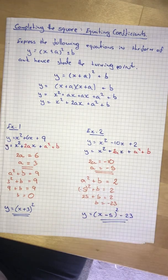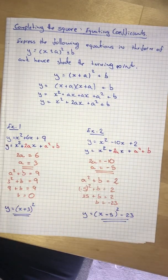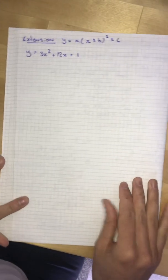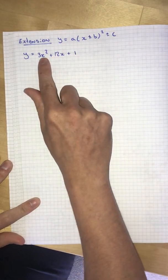So then I can write out that y will equal x minus 5 all squared minus 23. So that was the two equations there. I'm going to do a slightly more complicated one where the coefficient of the x squared is not 1.